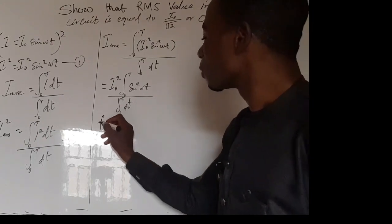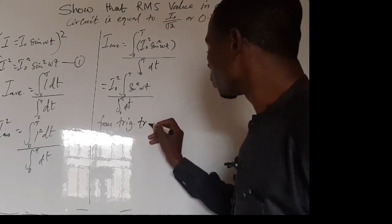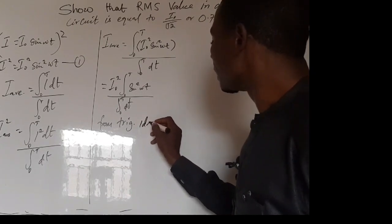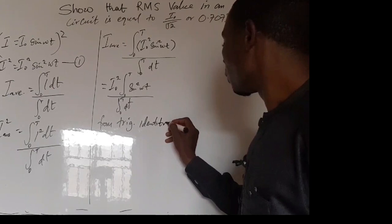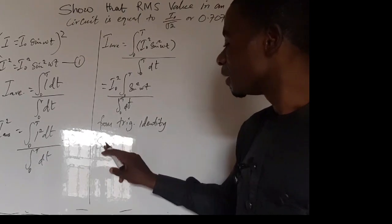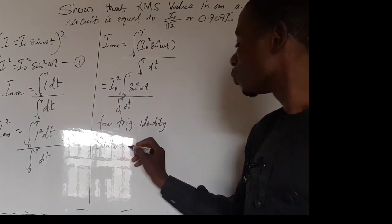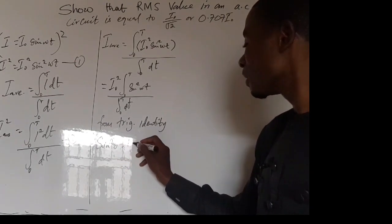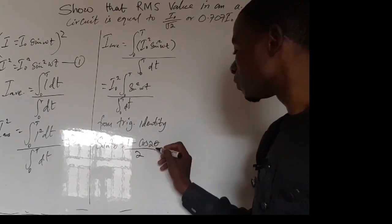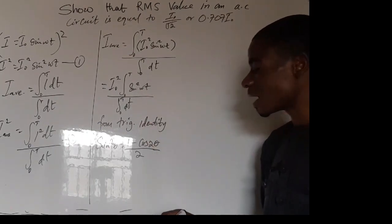From trigonometric identity, we say that if you are having sine-squared theta, it is going to give us 1 minus cos 2-theta, all over 2. We can apply this identity here because we are having sine-squared omega T.